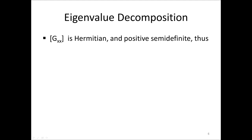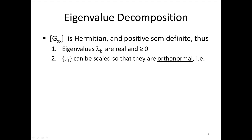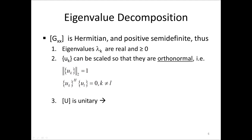From linear algebra theory, since GXX is Hermitian and positive semi-definite, the eigenvalues lambda_k are real and greater than or equal to zero. The eigenvectors u_k can be scaled so that they are orthonormal — they have length equal to 1, and u_k transpose times u_l for two different vectors is zero. Furthermore, the eigenvector matrix U is a unitary matrix, the complex equivalent of an orthogonal matrix, meaning the Hermitian transpose of U equals its inverse.